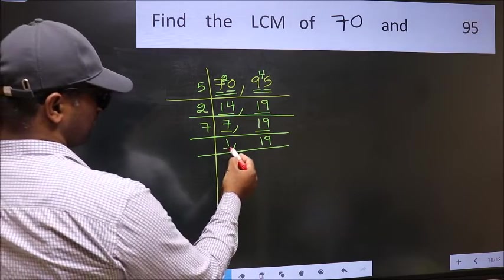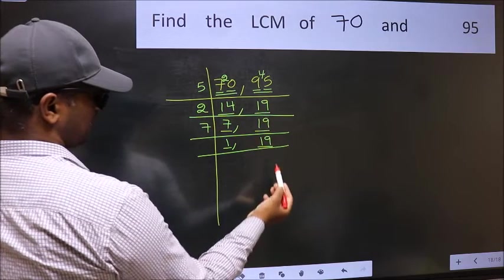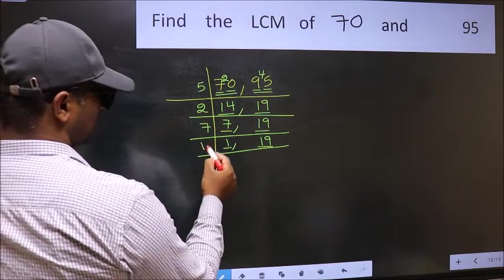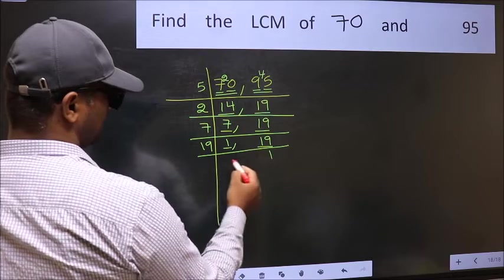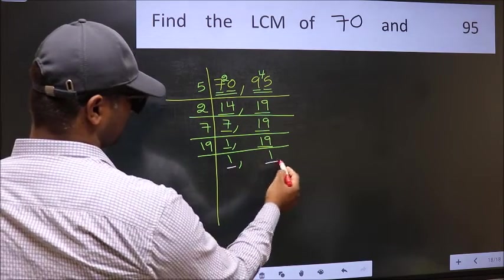Now we got 1 here, so focus on the next number 19. 19 is a prime number, so 19 once is 19. So we got 1 in both places.